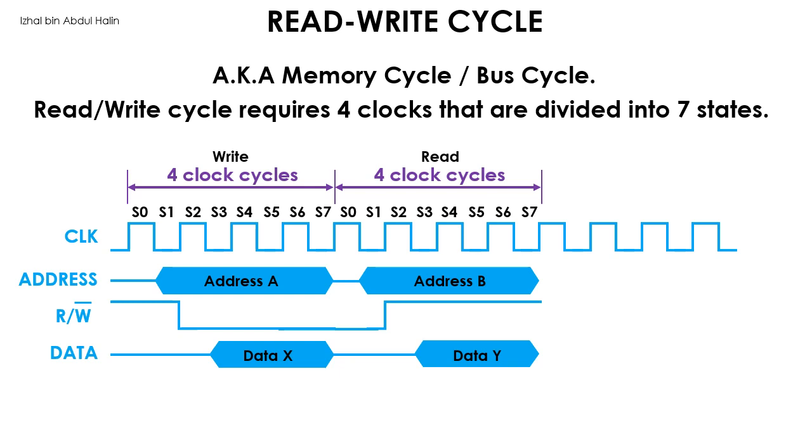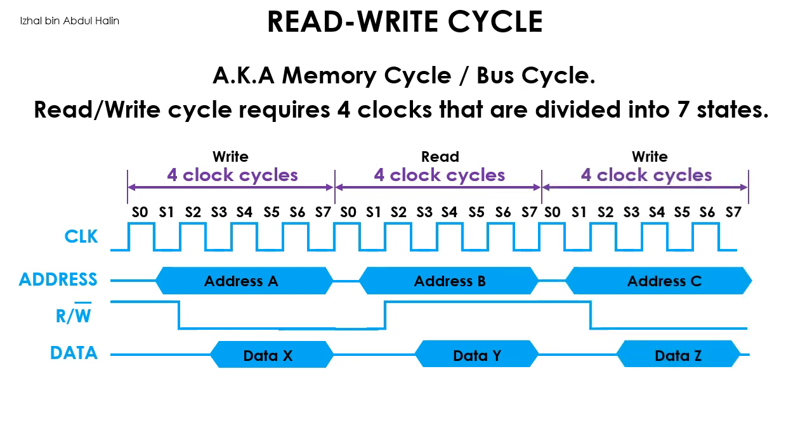Let's do another write cycle for fun, this time we are going to write data Z into address C. How would the signals involved look like? Pause the video and try to draw it in your notebook. Did you get this? Good, address C is supplied at state 1, the read write signal is asserted low for a write operation, it is asserted low starting at state 2. Finally data Z is presented at the beginning of state 3. Very good, you have understood the basics of the read write cycle.